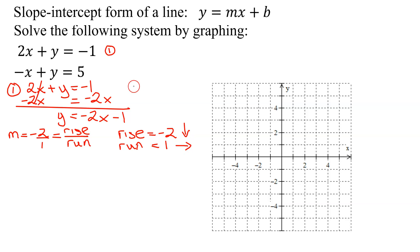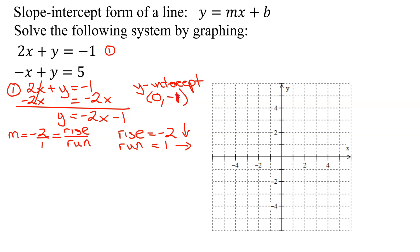The other thing I need to graph it is the y-intercept. The x-coordinate of every y-intercept is 0. The y-coordinate for this one is negative 1. So I can graph my first equation. The y-intercept is (0, negative 1), so I start at the origin, go nowhere in the x-direction, down 1 in the y-direction. There's my y-intercept.